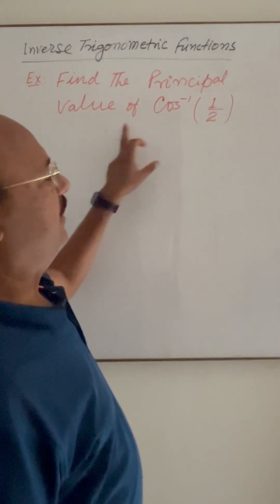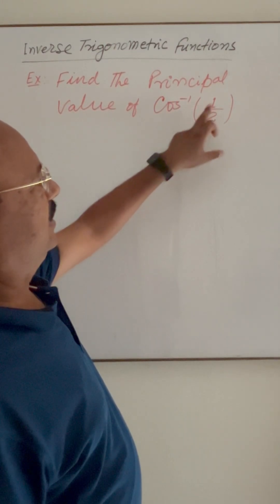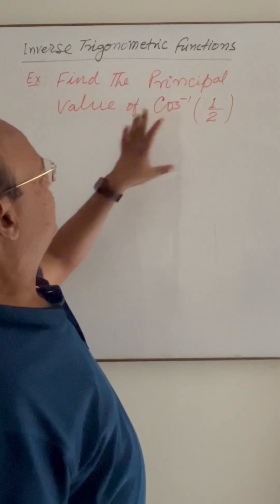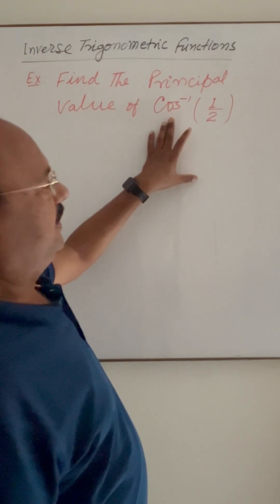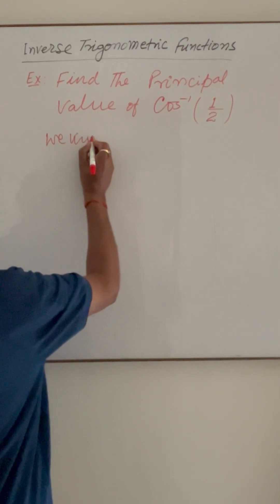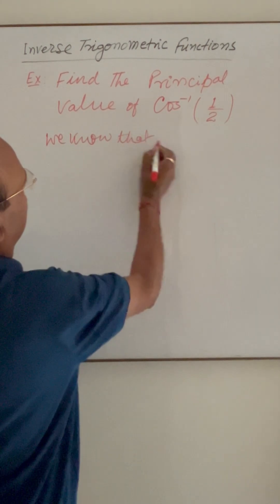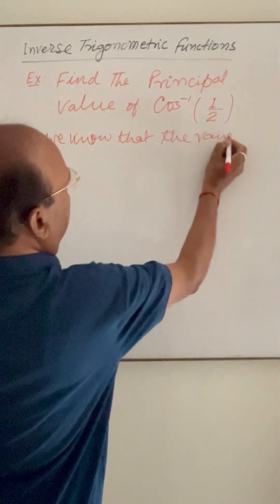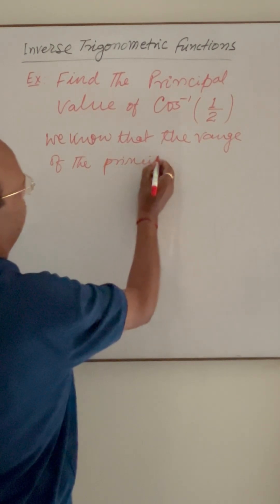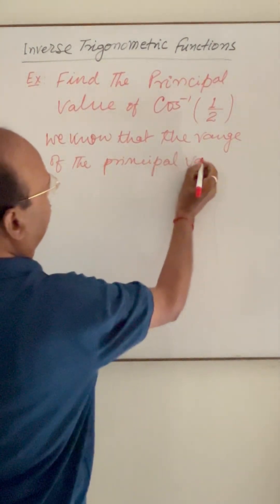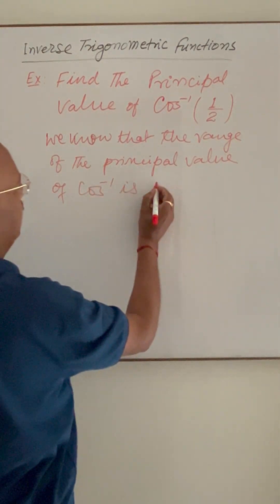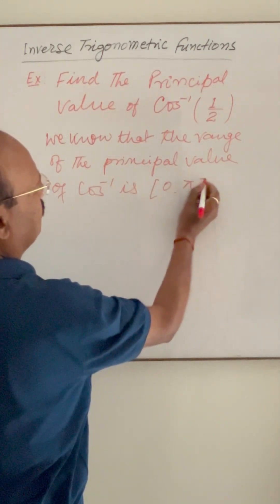The question is: find the principal value of cos inverse 1 by 2. We know that the range of the principal value of cos inverse is 0 to pi.